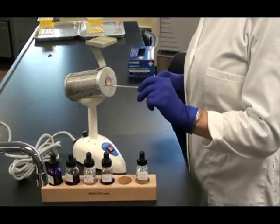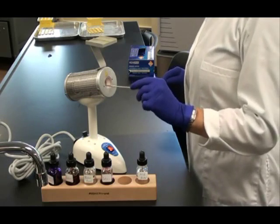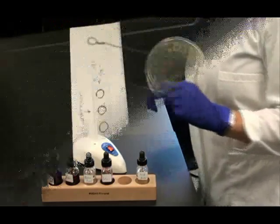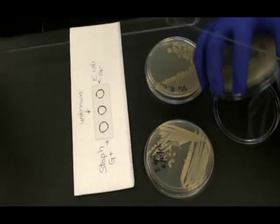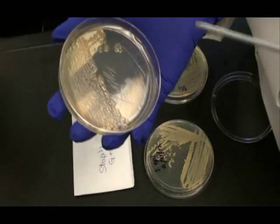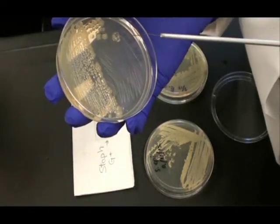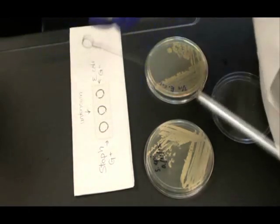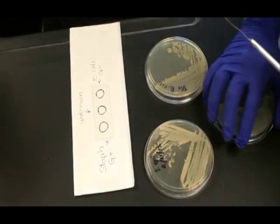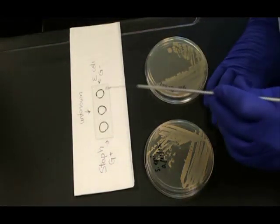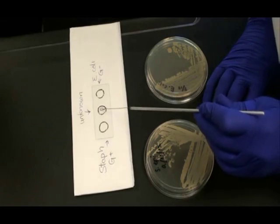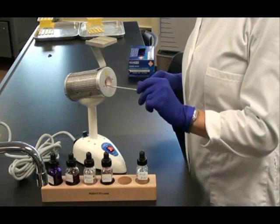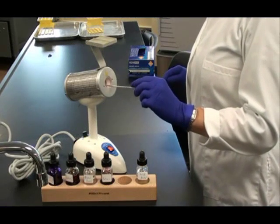I sterilize my loop again in the hub of the microincinerator. Once I remove it and it is cooled, I'm ready to obtain my unknown bacterial sample. So again, I use my cooled loop to gently run it across the surface of the medium grabbing a colony of bacteria. Then I swirl that unknown sample into the water in the circle in the center of my slide. Now I'm ready to sterilize my loop for the last time. I'm finished using it.